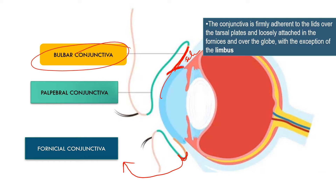The conjunctiva is firmly adhered to the lids over the tarsal plate, whereas at the fornix and the globe it is very loosely adhered. The exception is the limbus, where the conjunctiva is very strongly adhered.